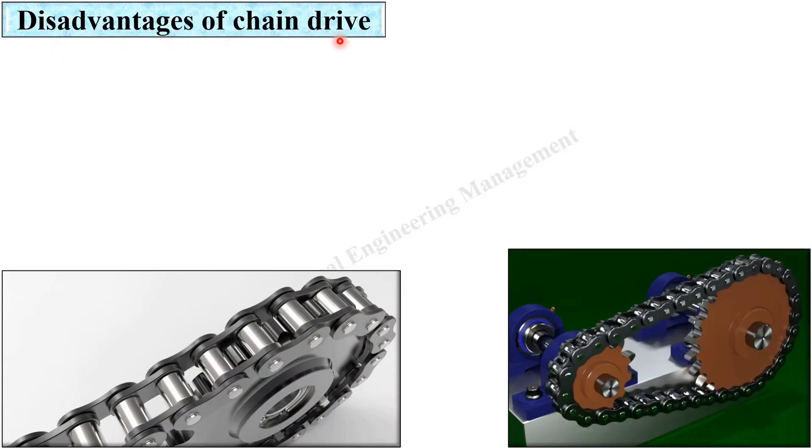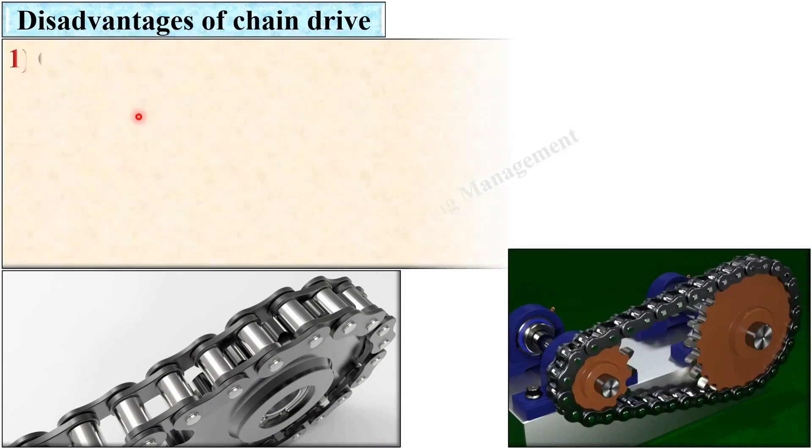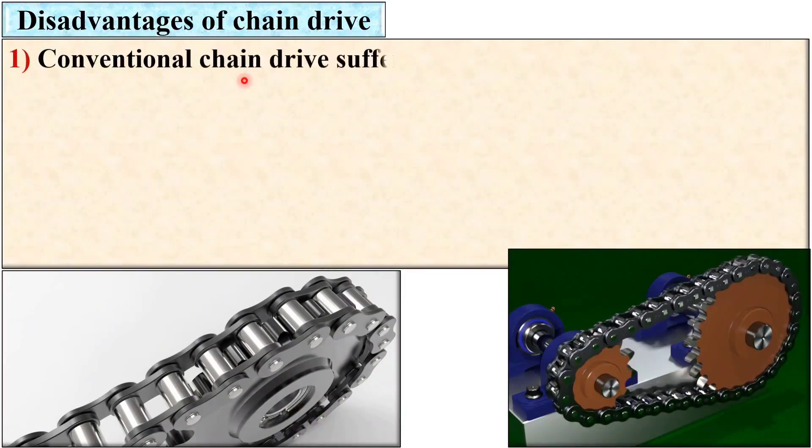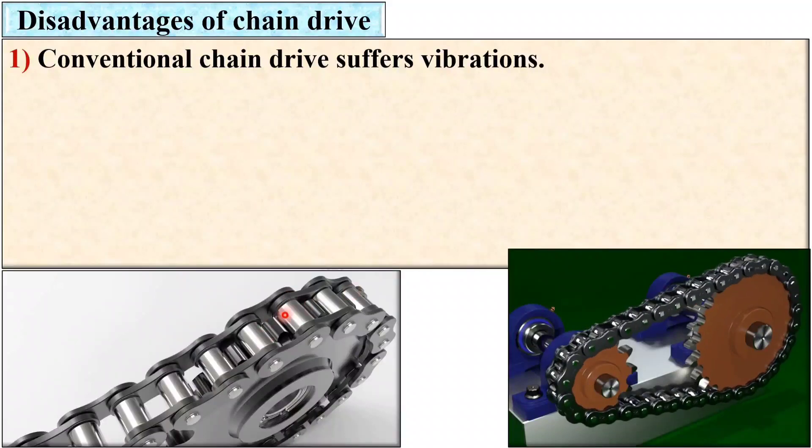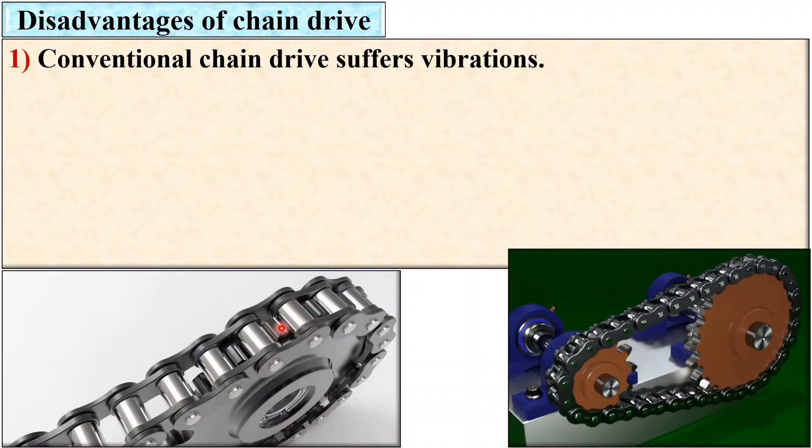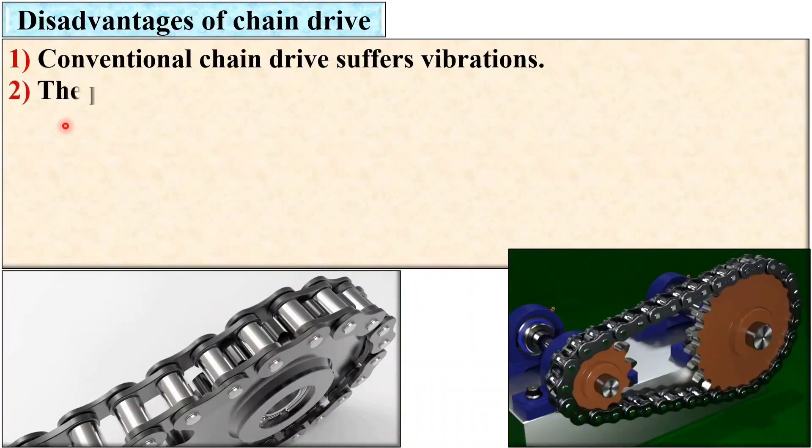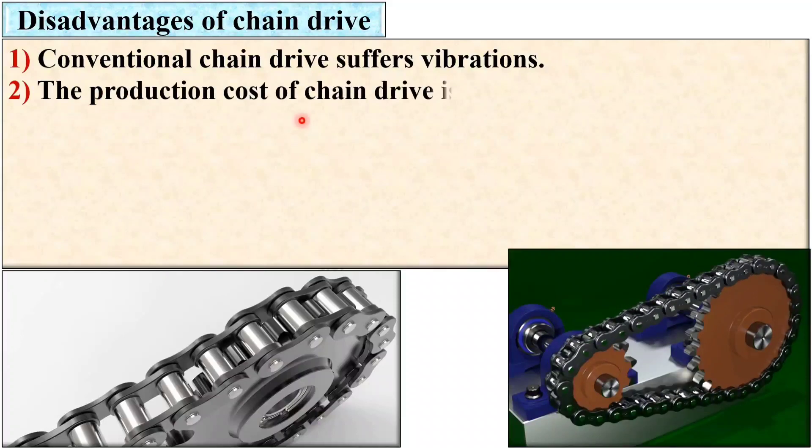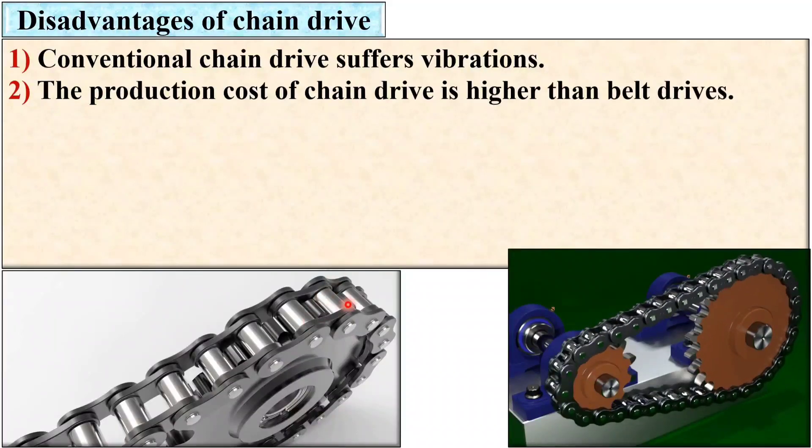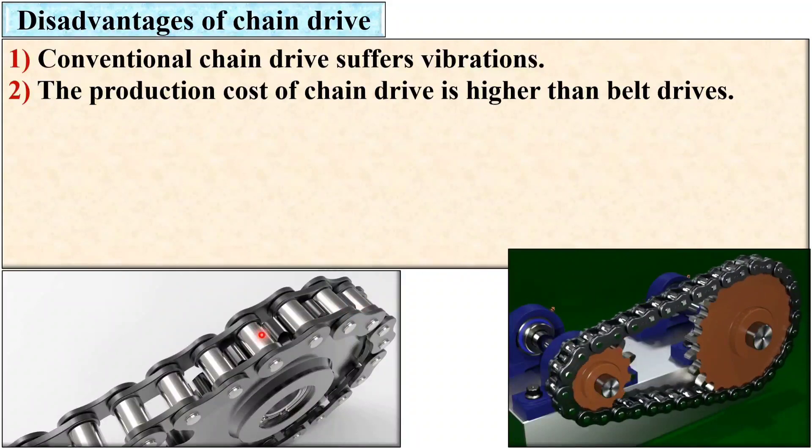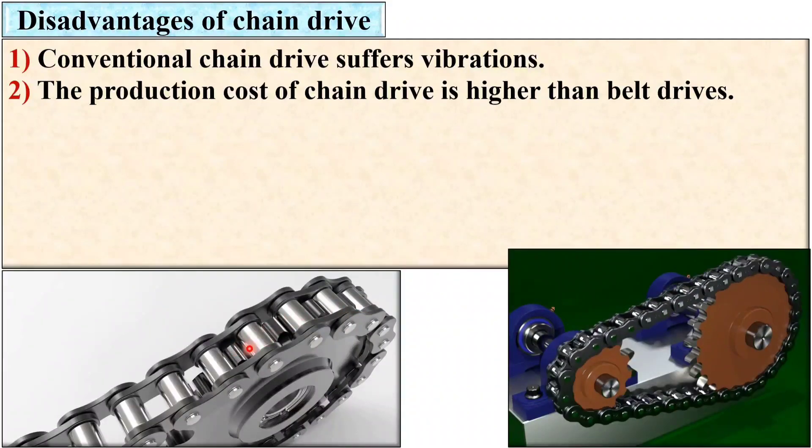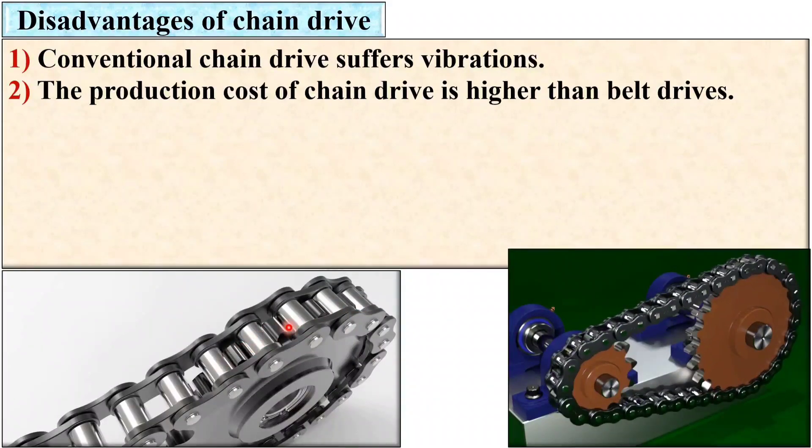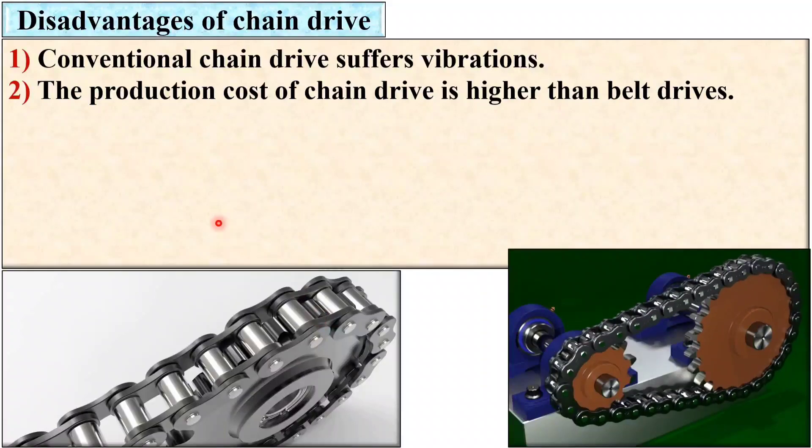Now next one, disadvantages of the chain drive. First, conventional chain drive suffers vibration because it is made from metal. Next, the production cost of the chain drive is higher than the belt drive because this is made from metal and requires special manufacturing process.